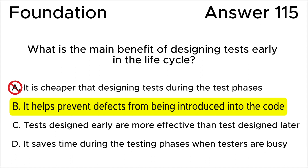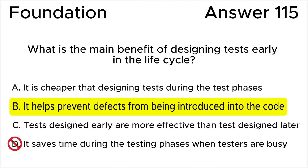All the rest of the answers are wrong. Answer A is wrong because the cost of designing tests is the same at any stage. Answer C is wrong because while early tests can indeed be more effective in preventing defects, the main benefit is not just about test effectiveness — it's about preventing defects from being introduced early in the process. Answer D is wrong because while early testing contributes to time and resource savings, the main benefit is not just about easing the workload during testing phases; it's about avoiding the need for extensive debugging and rework later in the SDLC.